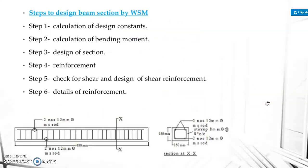Then we discuss the steps to design a beam section by WSM. Step 1: calculate the design constants. Then calculate the bending moment, then calculate the design of the section, then provide reinforcement, then check for shear and design shear reinforcement, and finally detail the reinforcement.